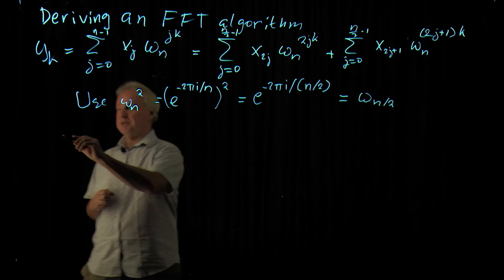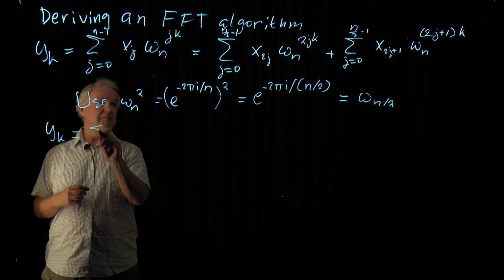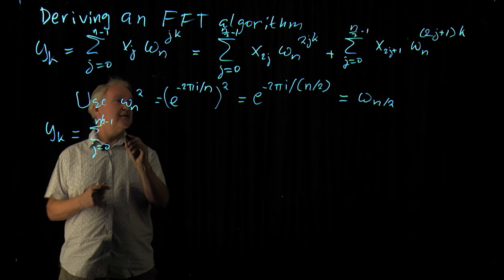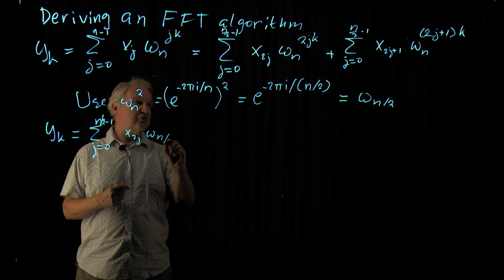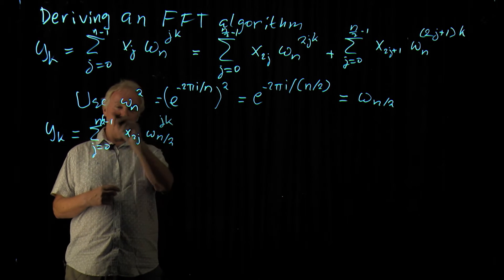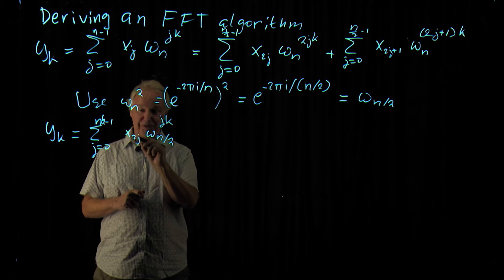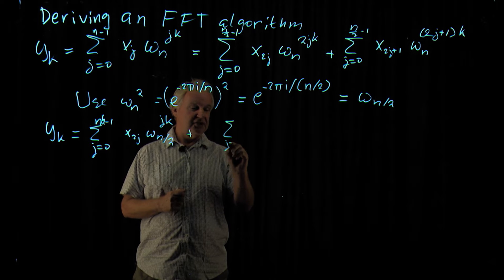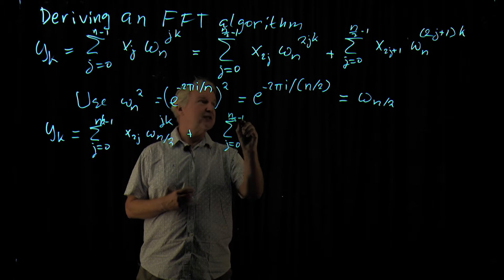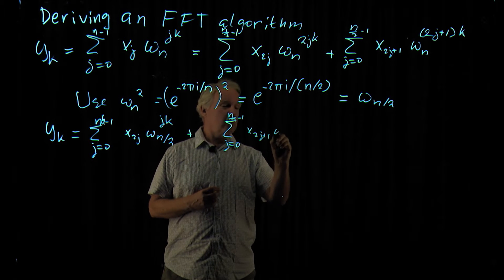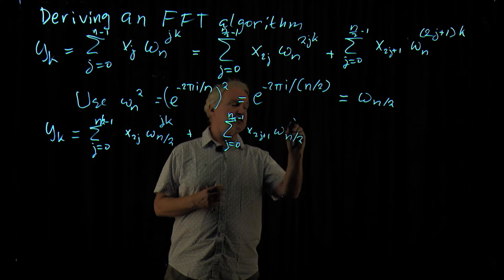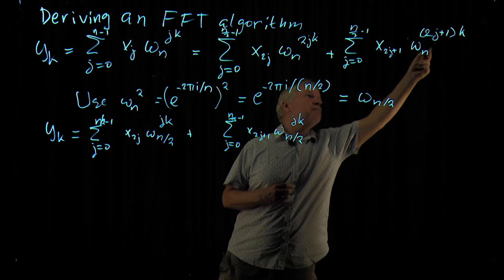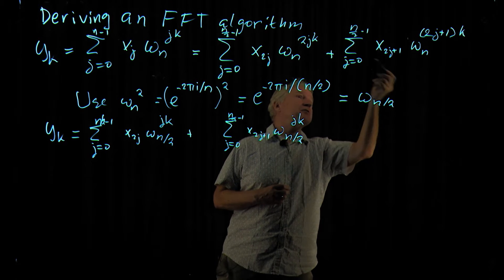Which is nice, because then we get y_k equals the sum j equals 0 to n/2 minus 1, x_{2j} omega_{n/2} to the power jk. And this really looks like a Fourier transform of size n/2 of the even components. It's plus the sum j equals 0 to n/2 minus 1, x_{2j+1} omega_n to the power jk, and the term 1 times k, omega_n to the power k. It doesn't depend on j, so we can move it here.